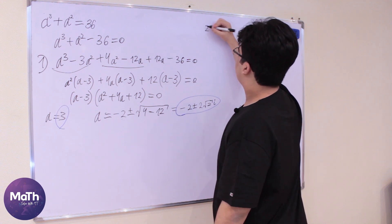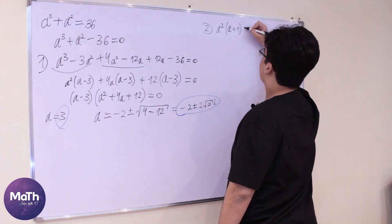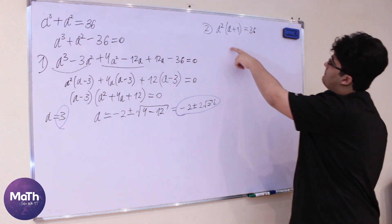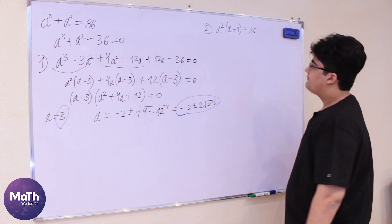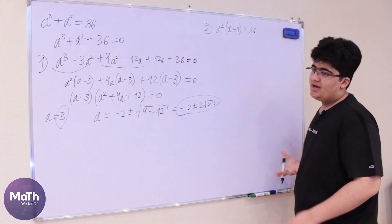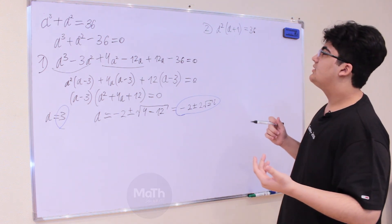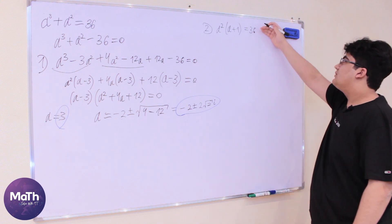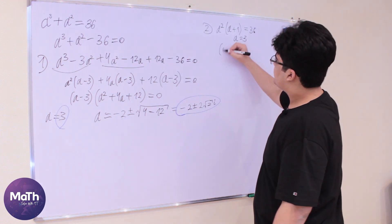For the second approach, if we factor out a², we get a²(a + 1) = 36. It's easy to see that a = 3 is a solution, because 9 × 4 = 36. Looking at factor pairs of 36: we need a² times (a+1), and nine times four works perfectly.